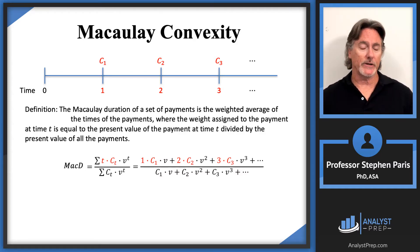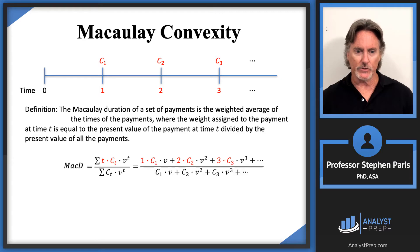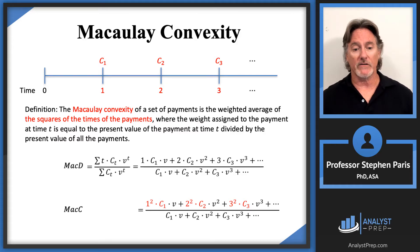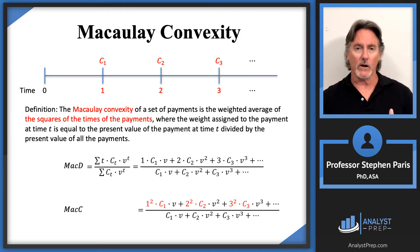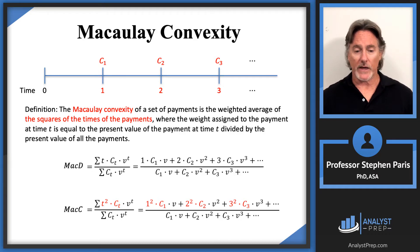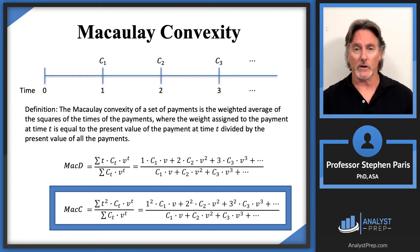Now let me highlight the difference between Macaulay convexity and Macaulay duration. The Macaulay convexity is also a weighted average with the same weights — it's just that now I'm taking the weighted average of the squares of the times of the payments. In the numerator, instead of taking the time of the payment times the payment amount and discounting it, I take the square of the time of the payment, multiply that times the payment amount, and then discount that. So in shorthand notation, I need a t-squared in the numerator instead of t. If you can calculate Macaulay duration, you can calculate Macaulay convexity — you're just squaring the time of the payment instead of using it directly.